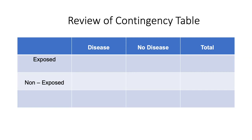With the creation of contingency tables, public health professionals like yourself are able to calculate measures of associations, such as risk ratios, odds ratios, and rate ratios.